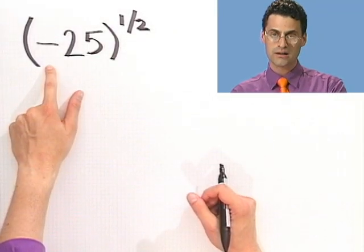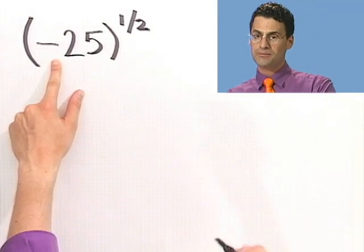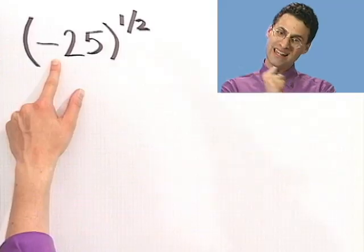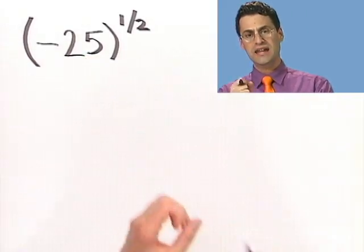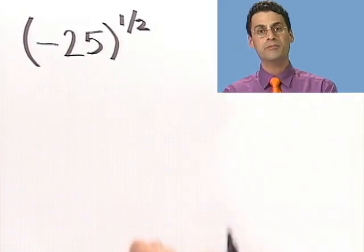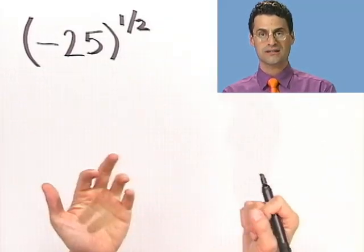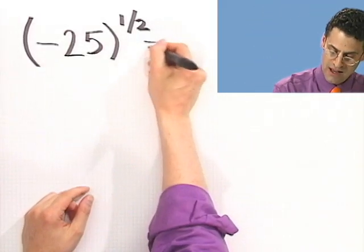Well, did you say can't be done? Well, then you're right, because we're taking the square root of a negative number. That means we have to find some number so that when I multiply it by itself, I get negative 25. But any number times itself can never be a negative. It'll either be 0 or positive. So in fact, this number is not a real number.